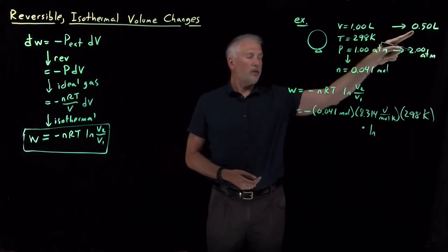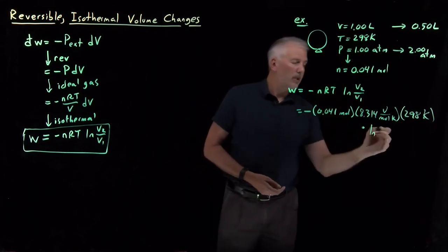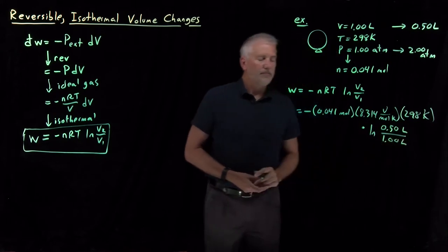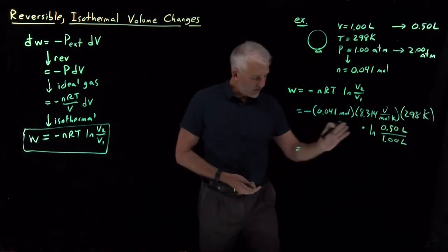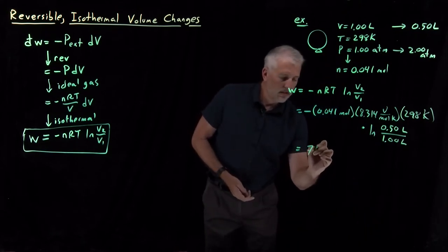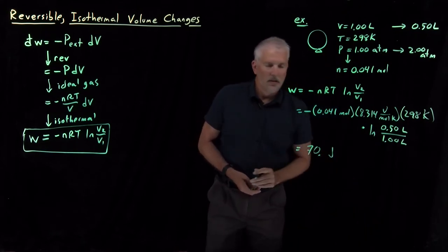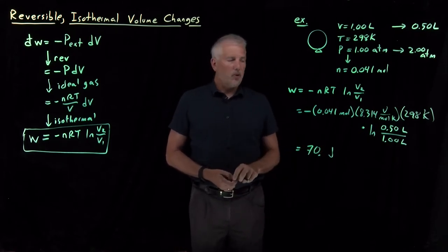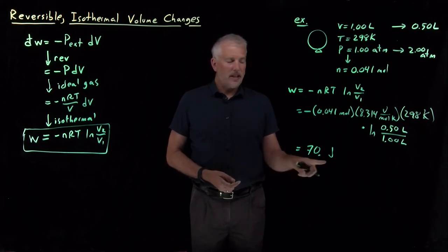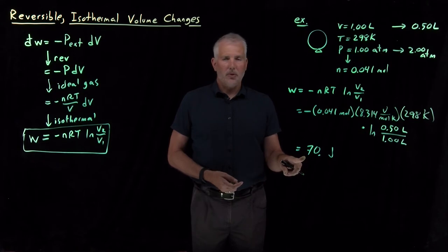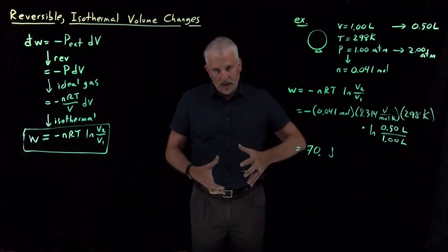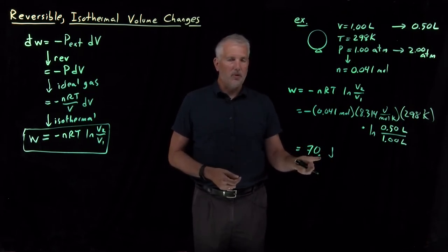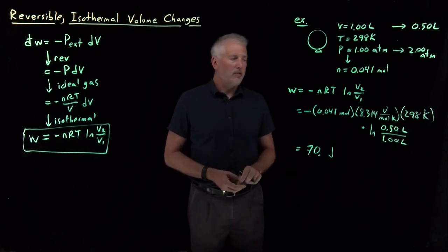I'm decreasing the volume, so the final volume is smaller than the initial volume — I have the log of a small number over a large number. Working that out, we get a value of 70 joules. The work in this case is a positive number, as we'd expect for a compression. When the gas is compressed, we're doing work on the gas, supplying energy into the system, so the net change in energy due to PV work is positive.